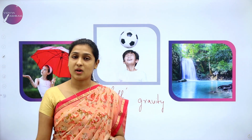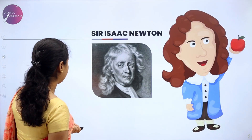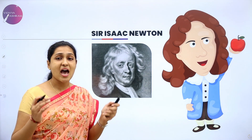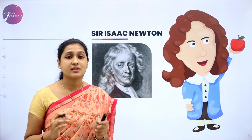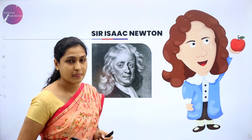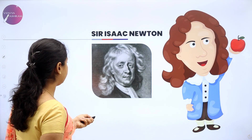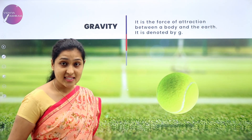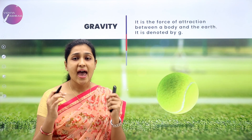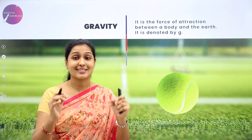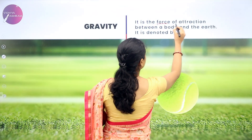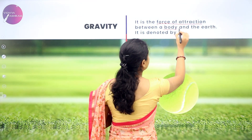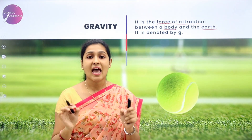It is because of a natural phenomenon called gravity. This natural phenomenon was given by Sir Isaac Newton. When he was sitting under an apple tree, he sees that there is an apple falling down. This is how he got to know about the natural phenomenon of gravity. The definition of gravity says that it is the force of attraction between a body and the earth. One thing you have to remember: it is the force of attraction, and between a body and the earth.